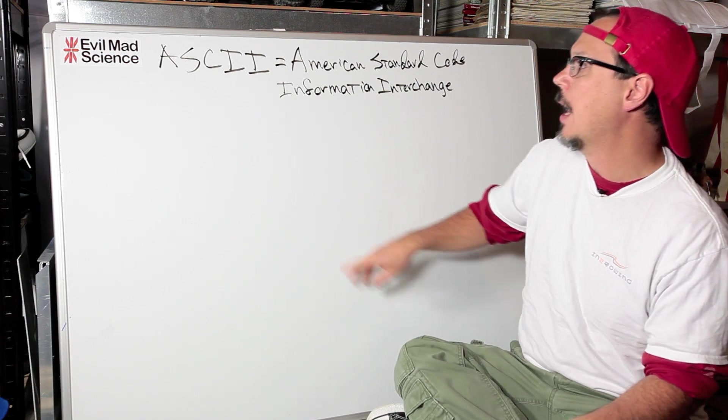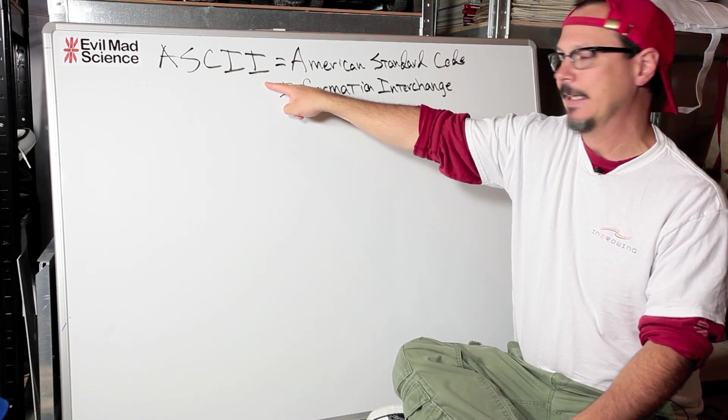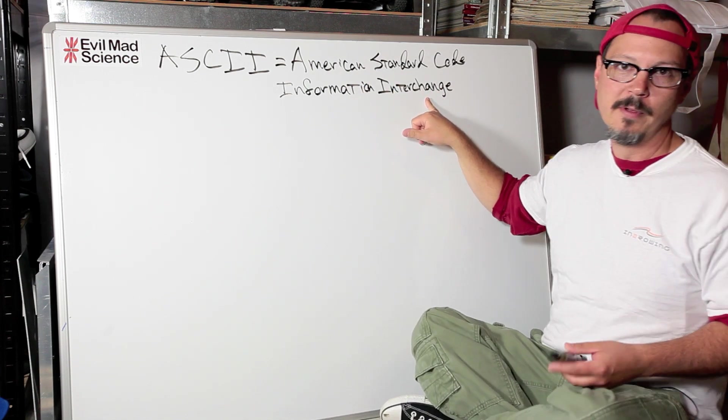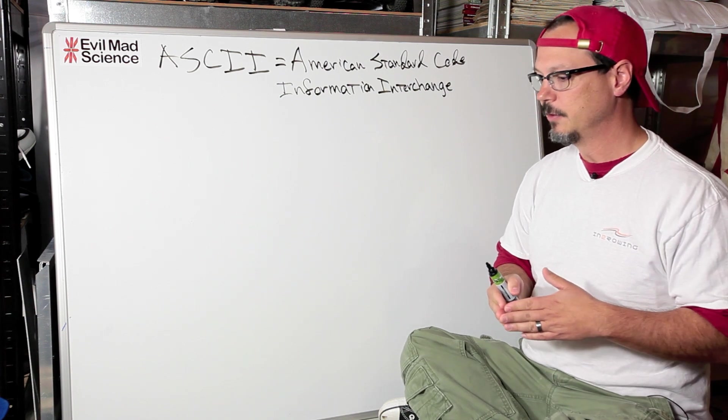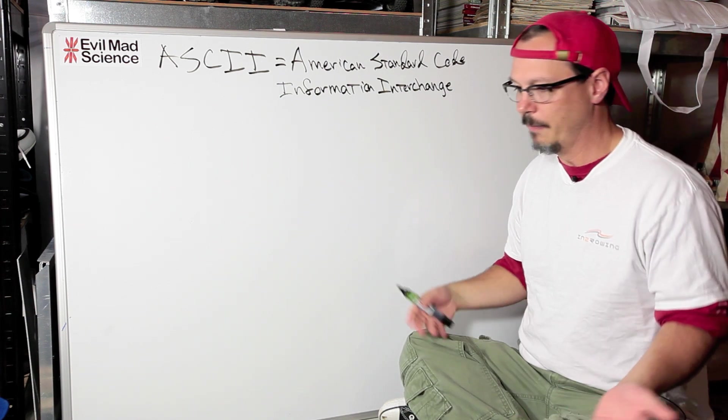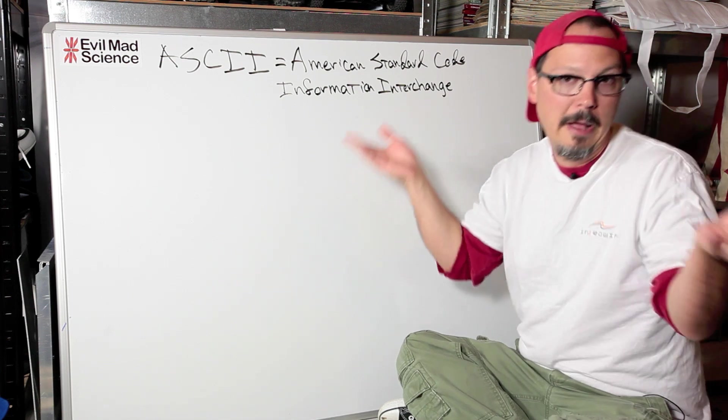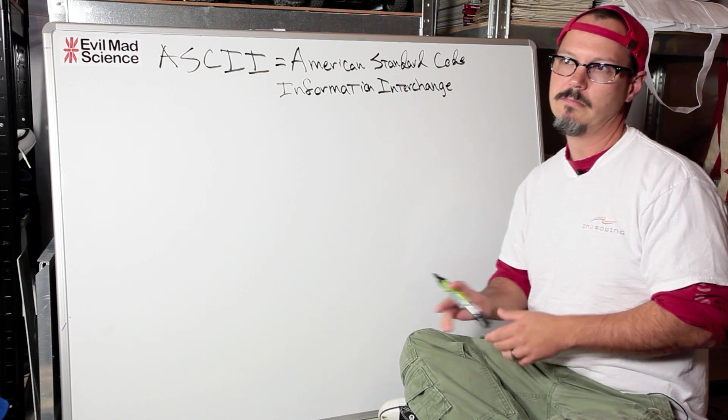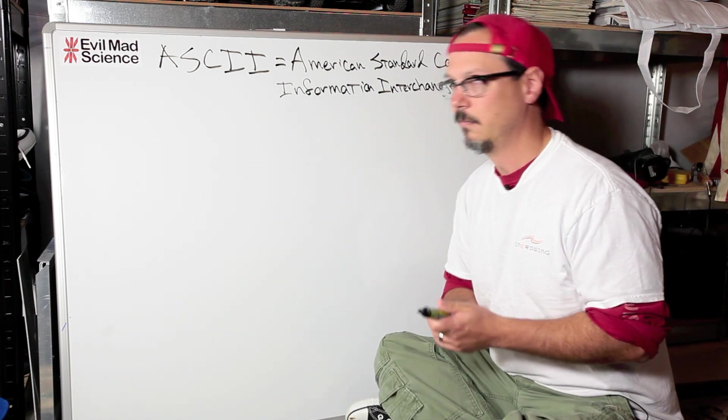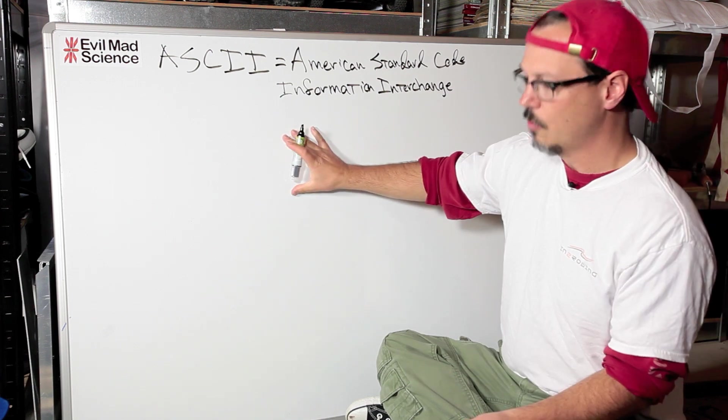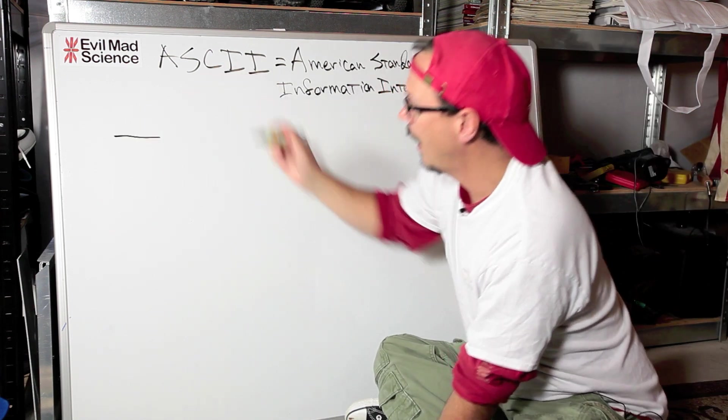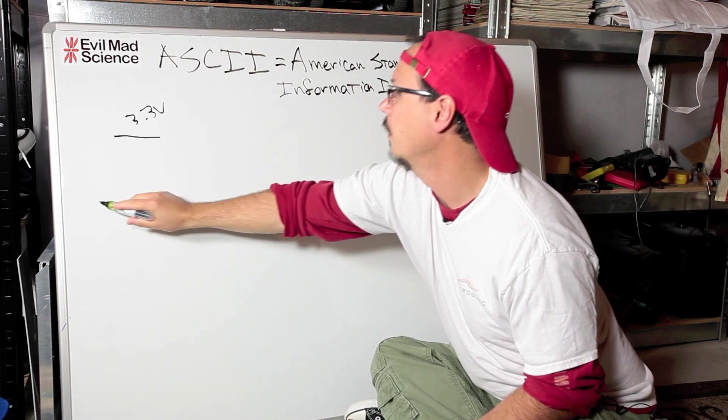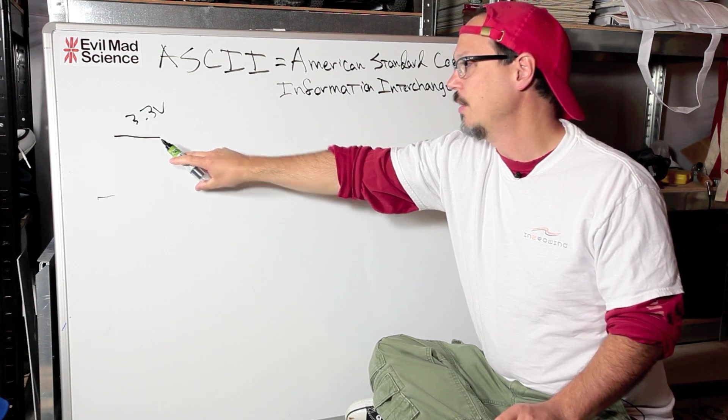The way that data is encoded is by ASCII, American Standard Code Information Interchange. ASCII is a serial representation of bit patterns, letters, data, what have you. It's really a 7-bit standard, but we generally use it in 8 bits and just leave the bit that we don't use as a zero.